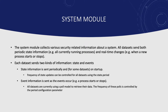The system module collects various security-related information about a system. All data sets send both periodic information — for example, the state of current running processes — and real-time changes, for example when a process starts or stops. State information is sent periodically and on system startup, controlled by the state.period configuration. Event information is sent as the event occurs, such as when you start or stop a process. For event data, all data sets use a poll model, with frequency controlled by the period configuration parameter.